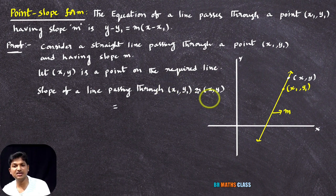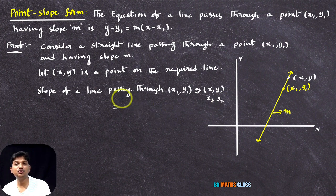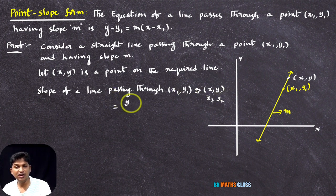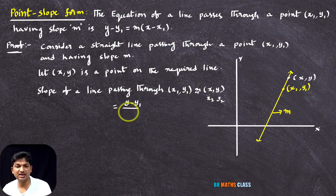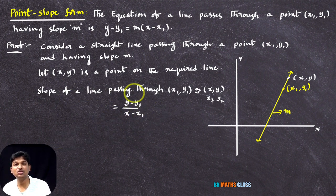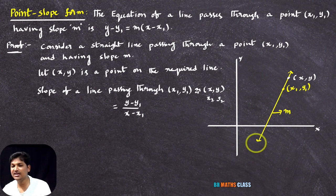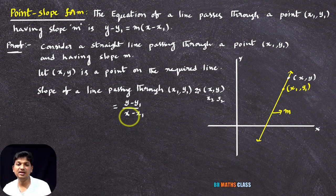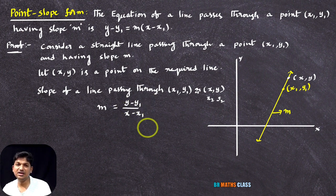The formula is y2 minus y1 divided by x2 minus x1. Here, I'll consider the first point as x1, y1 and the second point as x2, y2. So y2 minus y1 — here y2 is y — gives y minus y1, divided by x2 minus x1 — x2 is x — gives x minus x1. This is the slope of the line passing through two points. But in the question itself, they given that slope of this line is m. That means m equal to y minus y1 divided by x minus x1.